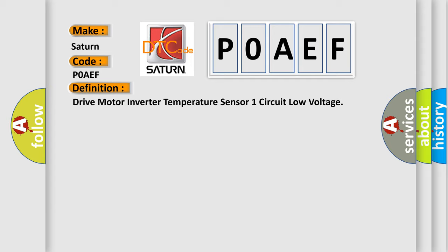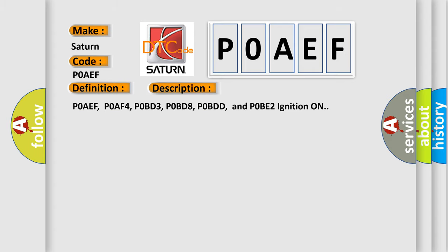And now this is a short description of this DTC code. POAEF, POAF4, POBD3, POBD8, POBDD, and POBE2 ignition on.